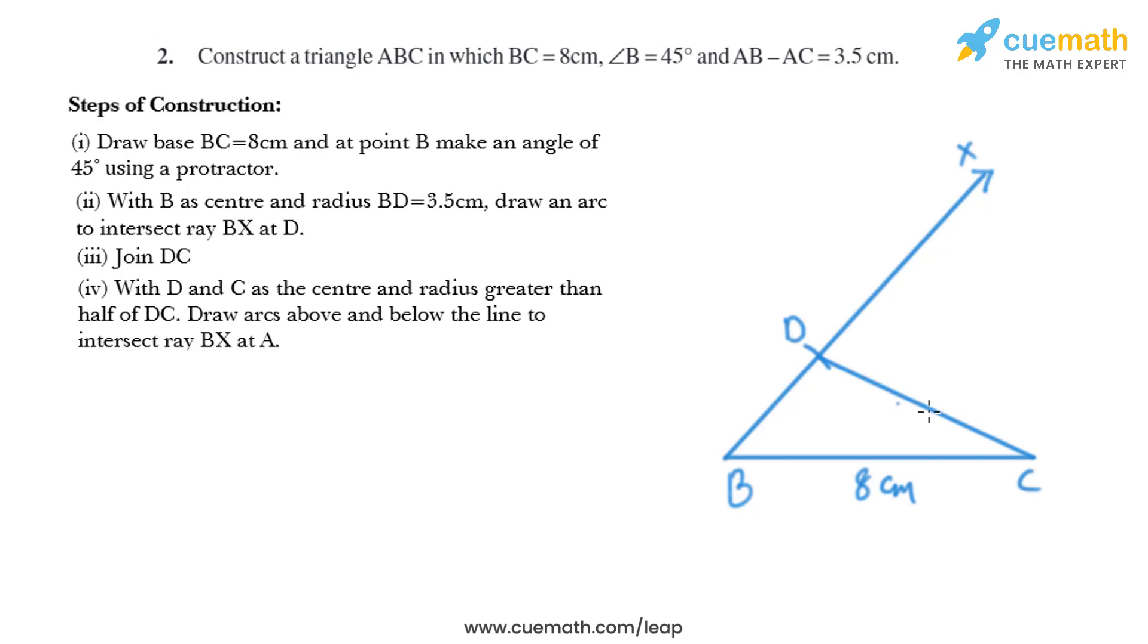We'll take the radius greater than half of D and C and put the compass at D and draw an arc like this. Similarly we'll put the compass at C and draw an arc. The same thing we will do below the line, so we'll draw an arc like this and another arc like this.